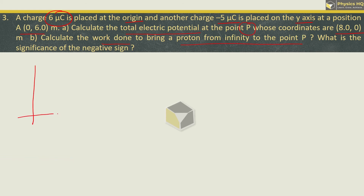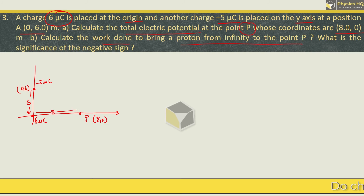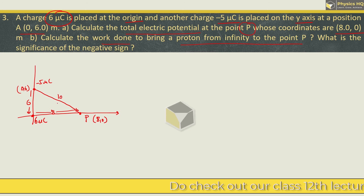First, let us place the charges. At the origin we have 6 micro coulomb. At (0, 6) we have minus 5 micro coulomb. This charge is at a height of 6, and point P is at coordinate (8, 0). The distance from the origin to P is 8. By the hypotenuse theorem, the distance from the charge at (0,6) to P at (8,0) is 10 meter.